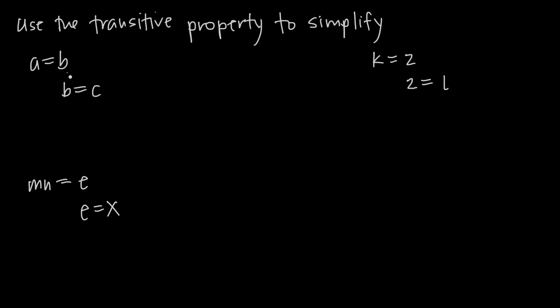The transitive property tells us that when we have one value equal to another value, so for example, if we know that A is equal to B, A and B have the same value, and then we're also told that B is equal to C, B and C have the same value, if we know that both of those things are true, then we know that A must be equal to C.